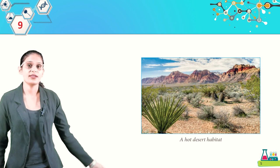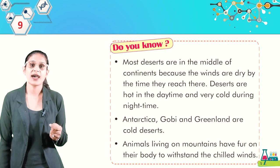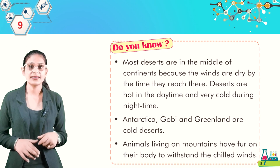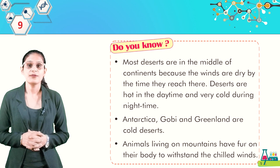Most deserts are in the middle of continents because winds are dry by the time they reach there. Deserts are hot in daytime and very cold at night. Antarctica, Gobi, and Greenland are cold deserts. Animals living on mountains have fur on their bodies to withstand chill winds.